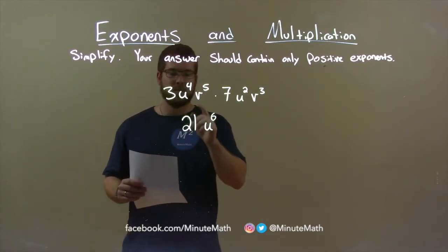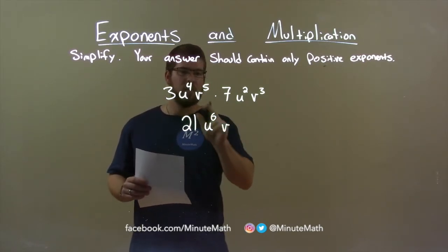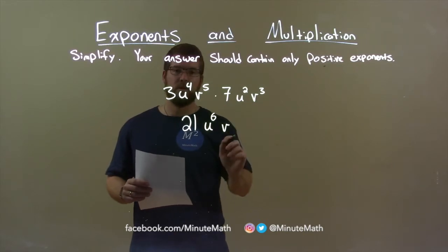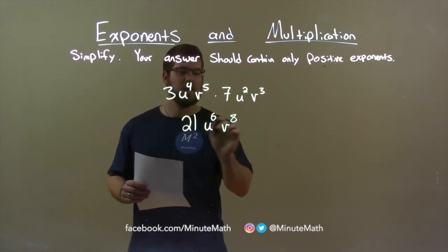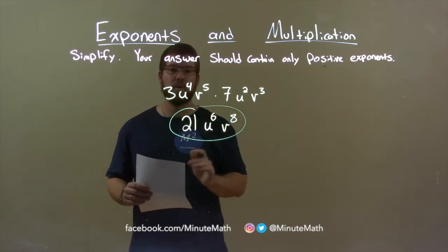Lastly, we look at the last variable, v. We have v to the 5th times v to the 3rd. Again, we add the exponents and 5 plus 3 is 8. Giving us our final answer: 21u to the 6th power, v to the 8th power.